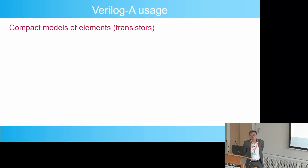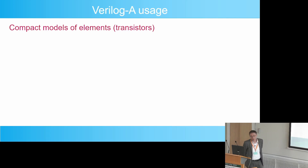What is the main usage of Verilog A? The main usage is for the distribution and development of compact models. Basically, these are the models of semiconductor devices that are used in integrated circuit design.